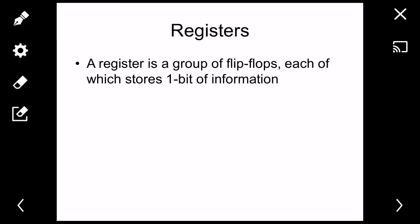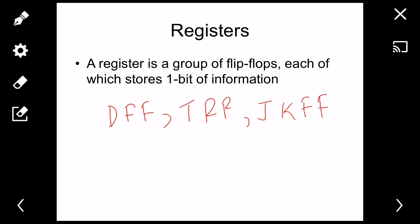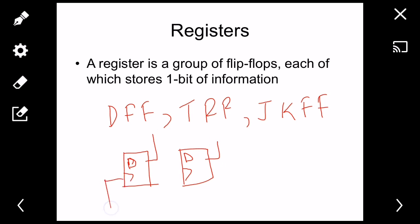A register is a group of flip-flops, each of which stores one bit of information. That means a D flip-flop is a one-bit register, a T flip-flop is a one-bit register, and the JK flip-flop is also a one-bit register — each can store one bit of information. If I combine two D flip-flops, it will be a two-bit register.